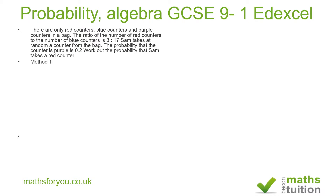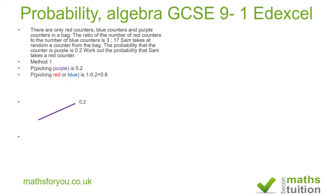There are two methods to do this. The first method is purely arithmetic; the second method involves a bit of algebra. The probability of picking a purple counter is 0.2, as shown in this diagram, which means that the probability of picking a red or blue counter is 1 minus 0.2, giving us 0.8.